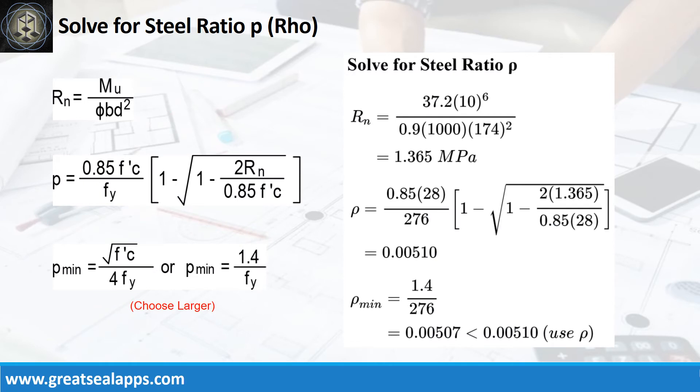Given maximum moment equals 37.2 kN meter, resistance factor equals 0.9, B equals 1000 mm and D equals 174 millimeters, the beam design ratio RN equals 1.365 MPa and reinforcement ratio rho equals 0.0051.